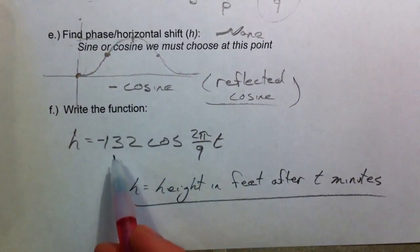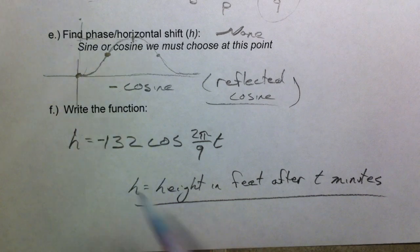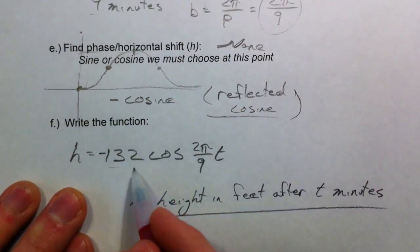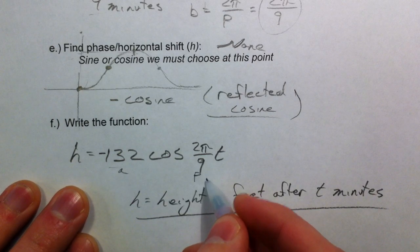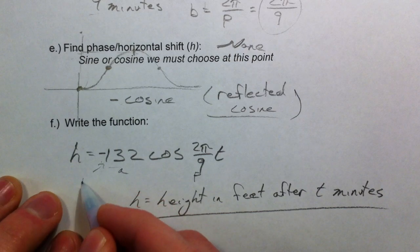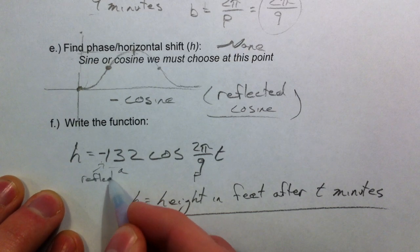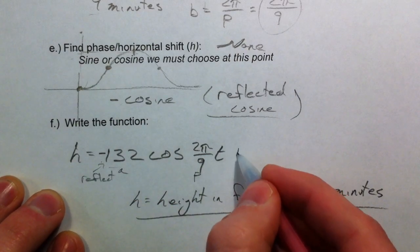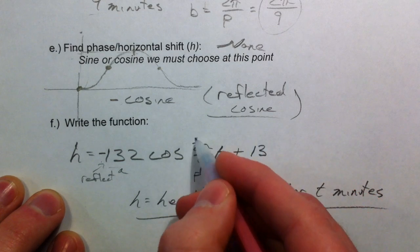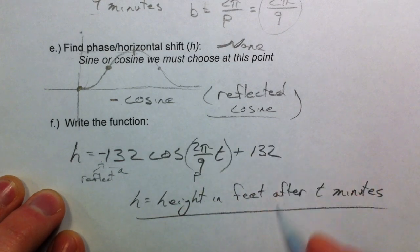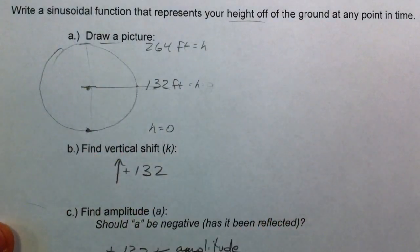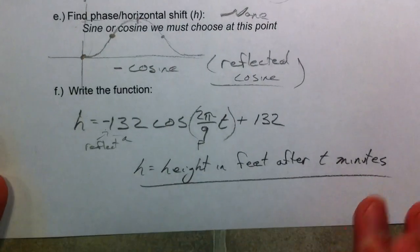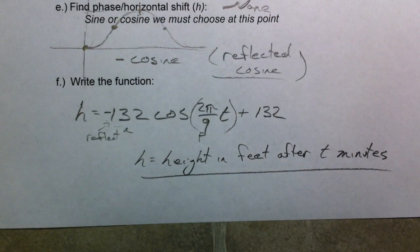Double-check that you've included everything: the amplitude (132), the b term (2π/9), the reflection (negative), and the vertical shift plus 132 at the end. We need that plus 132 because the center of the Ferris wheel is 132 feet up. Without it, the function would dip 132 feet underground, which obviously wouldn't work.